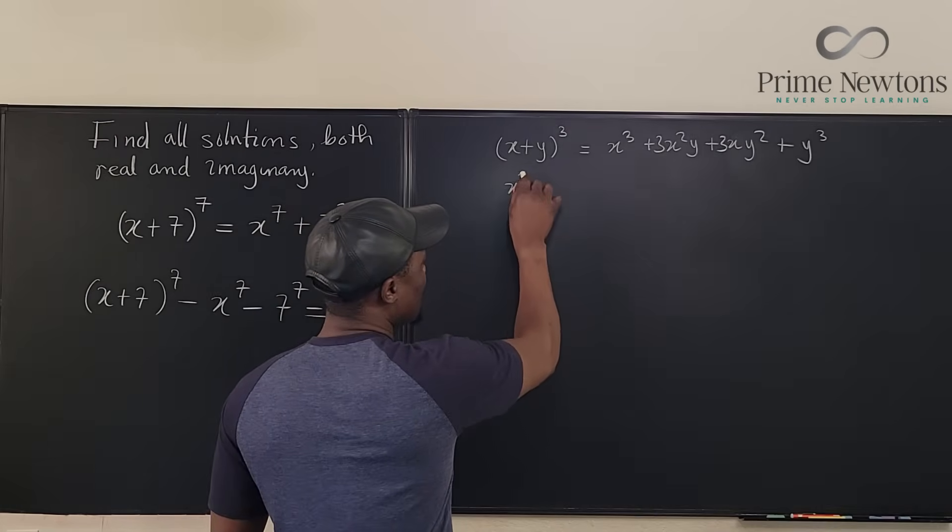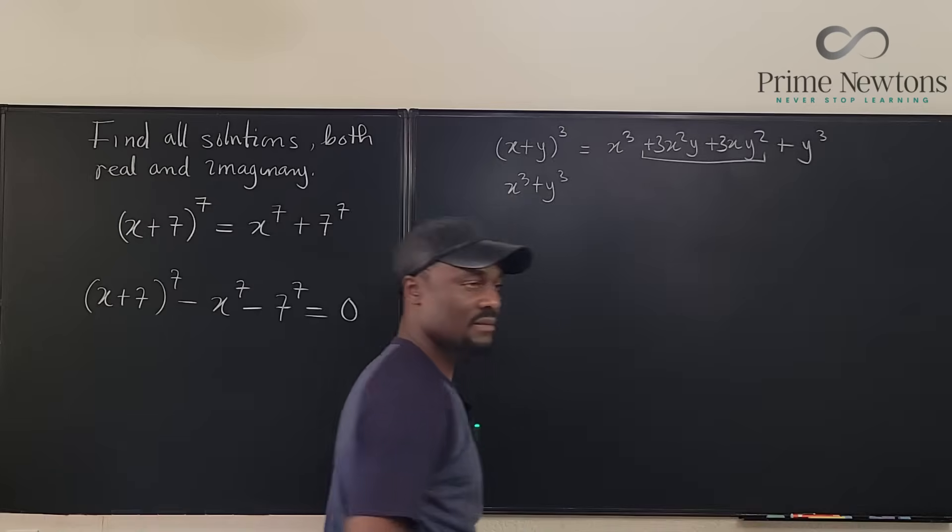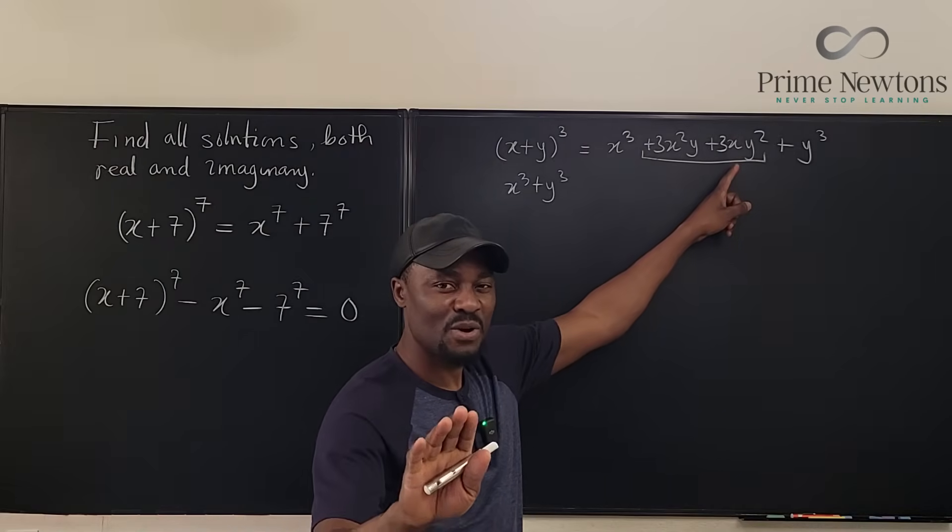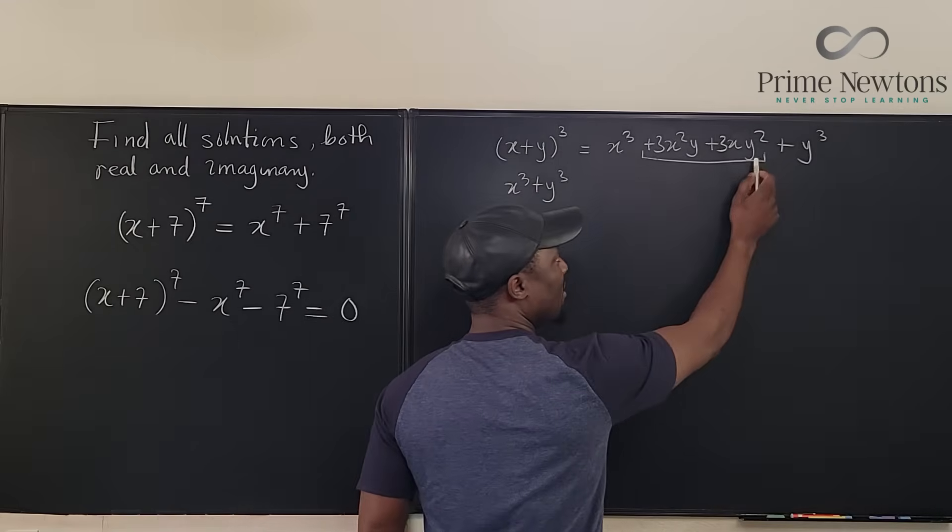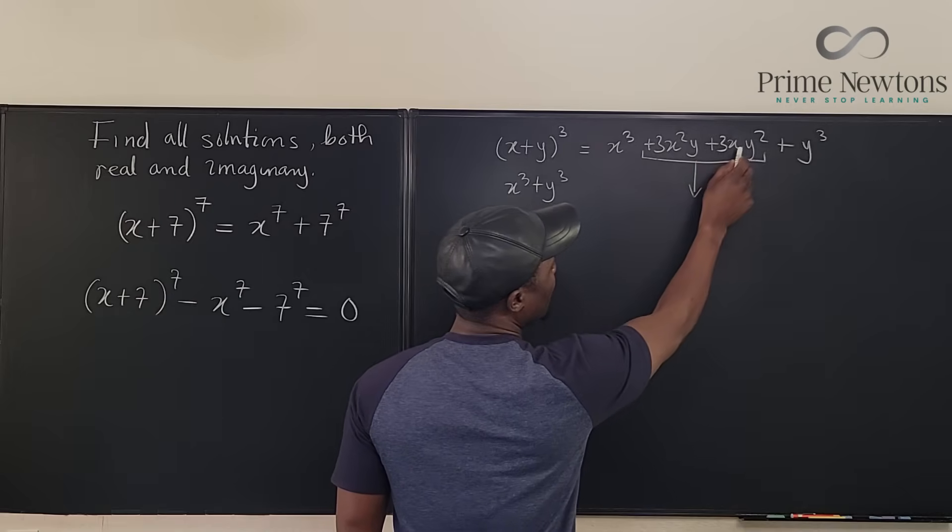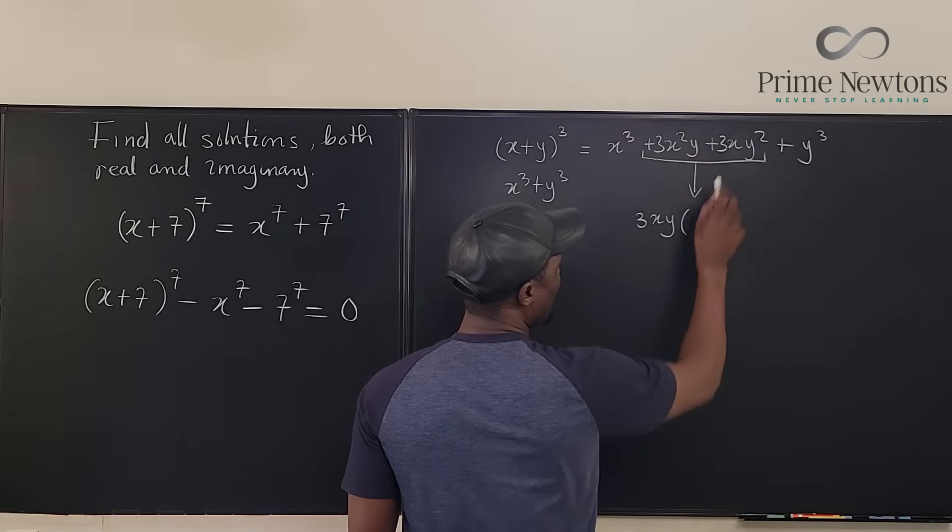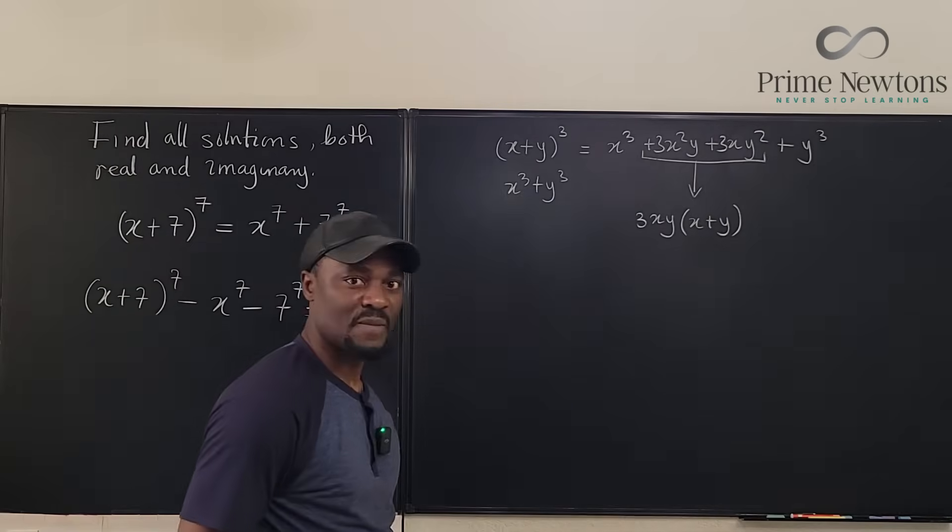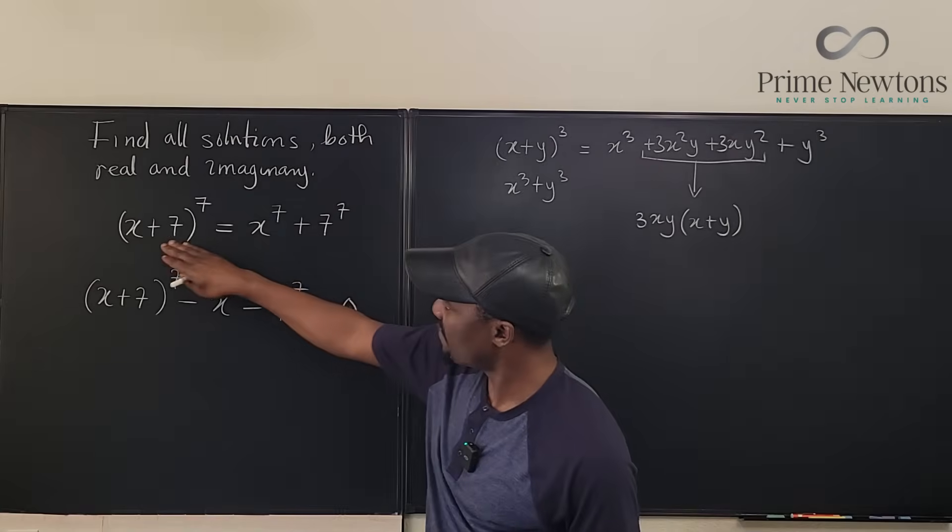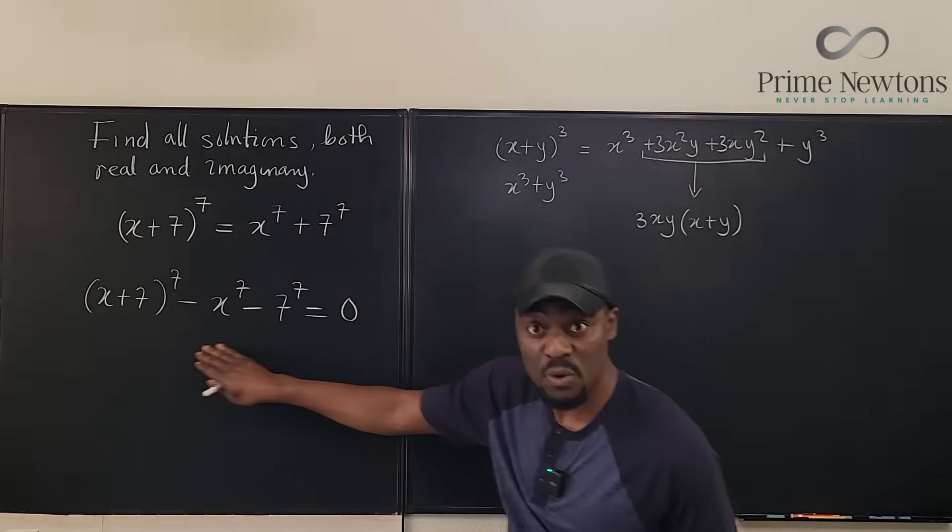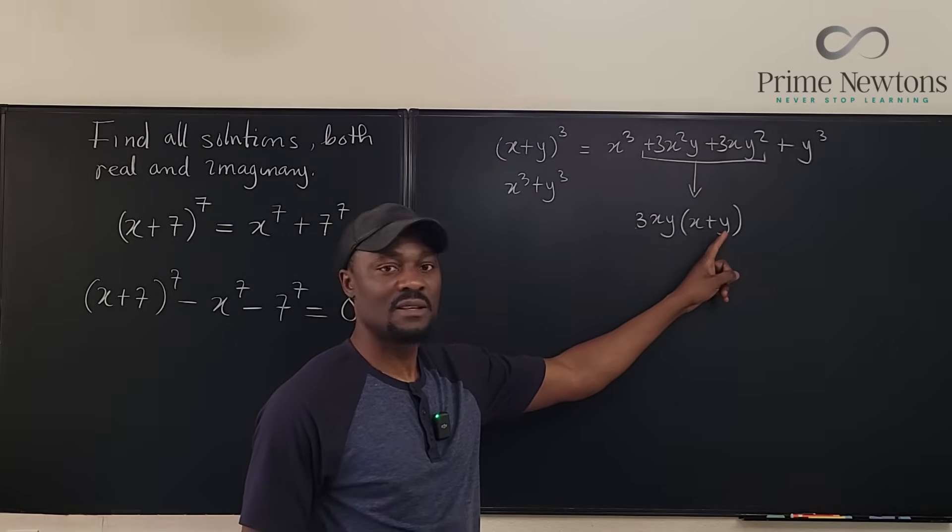(X + Y)^3, we want to see how this differs from X^3 + Y^3. When you expand this, that's going to be X^3 + 3X^2Y + 3XY^2 + Y^3. We want to compare it to X^3 + Y^3. You'll notice that the difference between this and this is just what is in the middle. And this middle part can be written as what's common to this and this. I think 3XY. Here we're going to have X. Here we have Y. X plus Y. Do you see the difference?